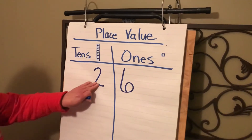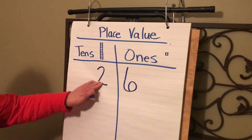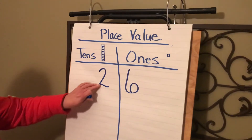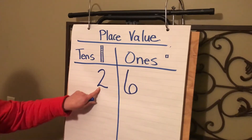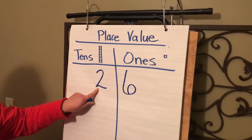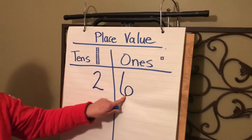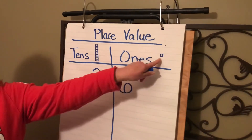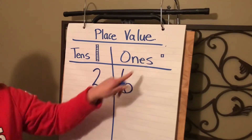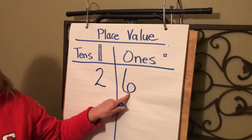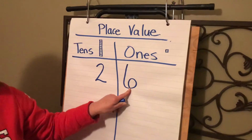2 is in the tens place. This 2 represents the number 20. The 6 is in the ones place. It represents just six ones.